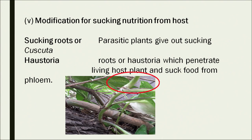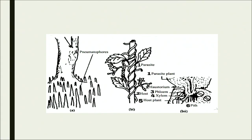In this picture, the red-circled portions show small projections coming out of the stem — these are the haustoria. Haustoria perform the function of sucking nutrition from the host plant. These haustoria are present in Cuscuta and certain varieties of Ipomoea and also in money plant.